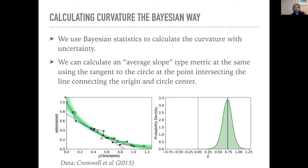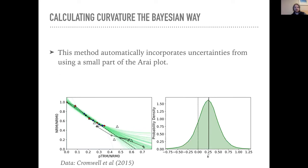Here's an example where there's potentially more going wrong than just curvature, but you can see that the average slope — the median value — and the circle fit look like this. The circle fits are done by scaling the data first to avoid the issue of different lab fields giving different curvatures. They're scaled to a zero-one by zero-one scale, and then I unscale the slope. In this case you've got something that's definitely not linear, and there's no overlap with linear in the probability distribution of the curvature.